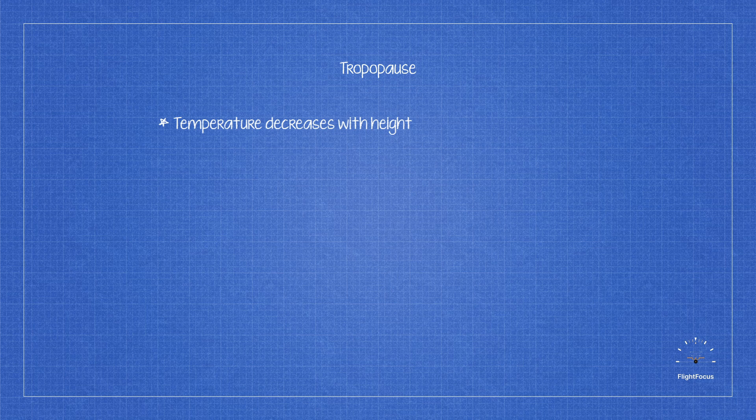The upper boundary of the troposphere is known as the tropopause. It separates the troposphere from the stratosphere. Here, temperature ceases to decrease with height at the boundary of the tropopause.